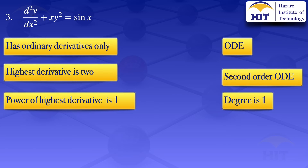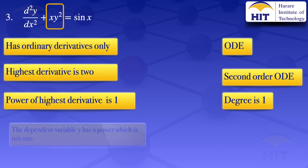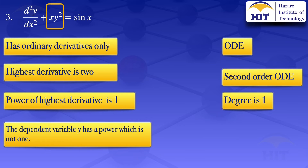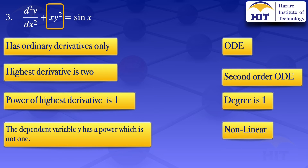Looking at the term x multiplied by y squared, the dependent variable y has a power which is not 1. By definition, if the dependent variable is raised to a power which is not 1, the equation is said to be non-linear. So question number 3 is a second order ODE of degree 1 which is non-linear.